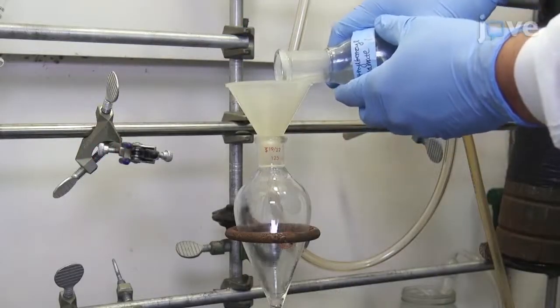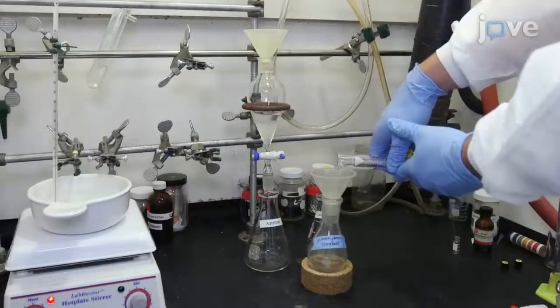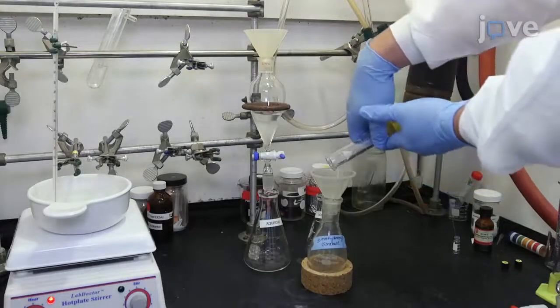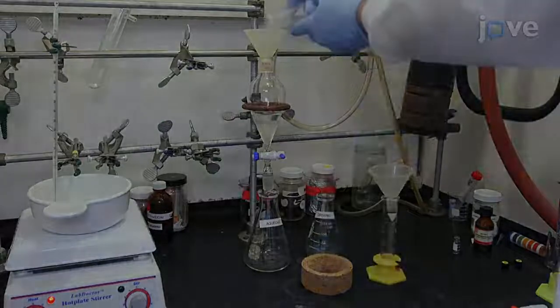Next, pour the solution into a separatory funnel. Rinse the evaporating flask with 5 milliliters of diethyl ether and add the rinse to the separatory funnel.